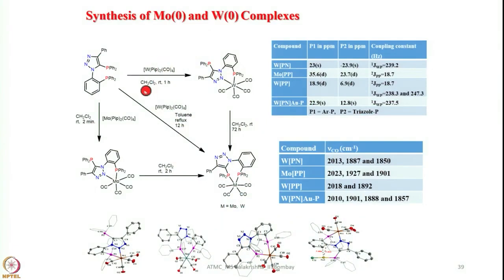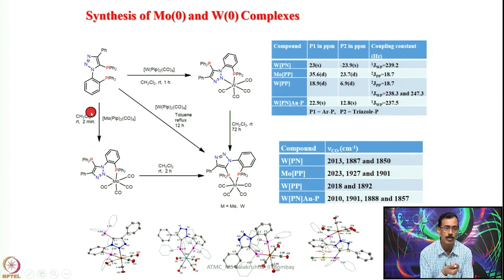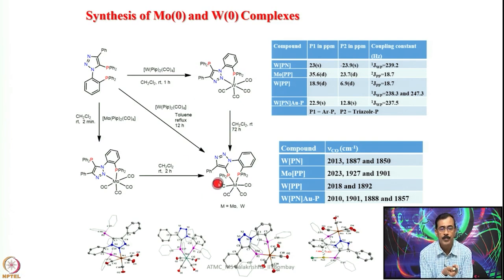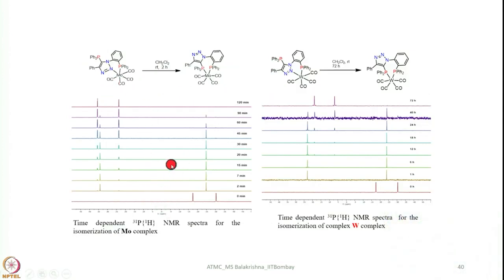If you take this bisphosphine and treat it with tungsten tetracarbonyl having two labile ligands such as pyridine, they can be readily replaced at room temperature in dichloromethane to initially form a PN compound. On standing in solution for 72 hours it undergoes isomerization to form the PP compound. In the case of molybdenum the same thing happens, but the PN-coordinated compound is relatively unstable — isomerization from PN to PP occurs within two hours, whereas tungsten takes 72 hours. DFT calculations can be done to understand the energy profile behind this difference. This conversion was monitored using ³¹P NMR, which is very handy in characterizing compounds and understanding reaction sequences.